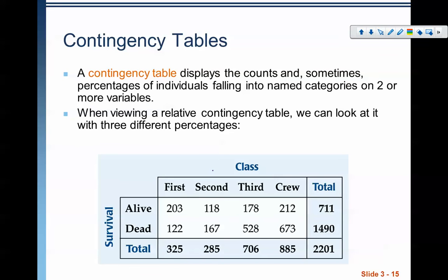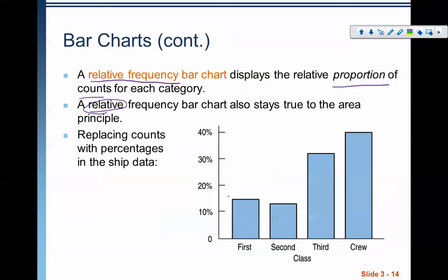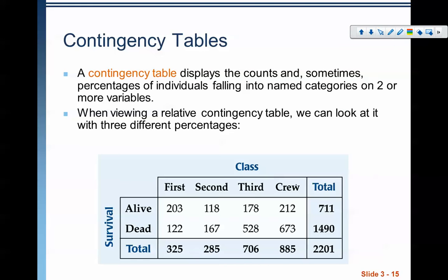Now let's talk about contingency tables. A contingency table is another way of displaying data. It displays the counts and sometimes percentages of individuals falling into named categories on two or more variables. Notice that on a bar chart we're only looking at one variable, but on a contingency table we're looking at two variables. This is the Titanic data from the book. We have the two variables: what class the person was in — first, second, third, or crew — and whether or not they survived, alive or dead.